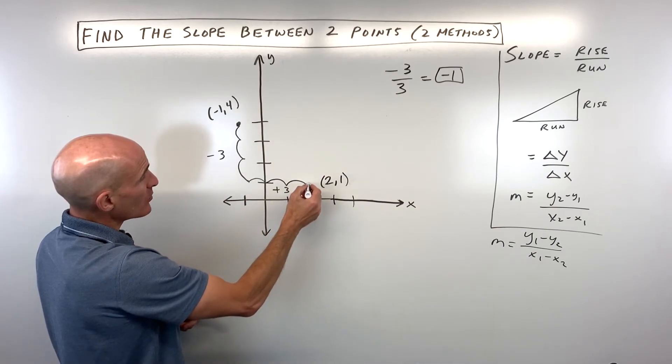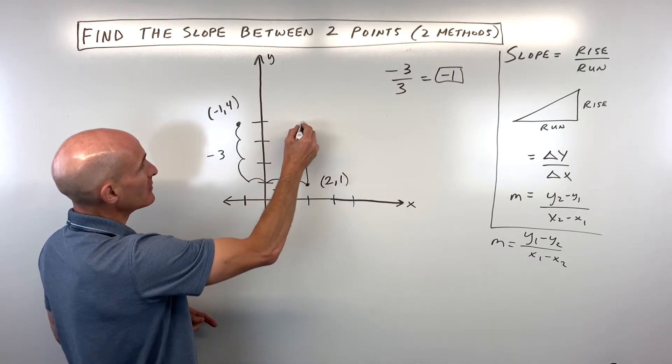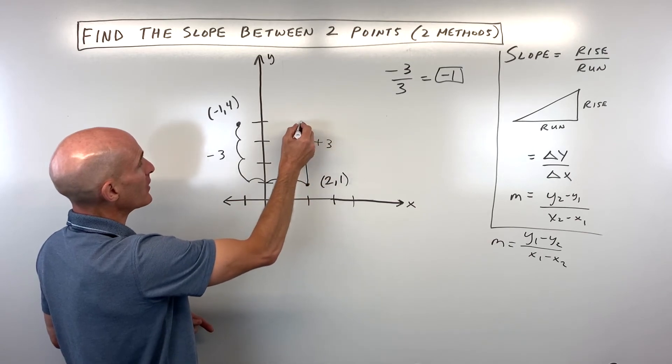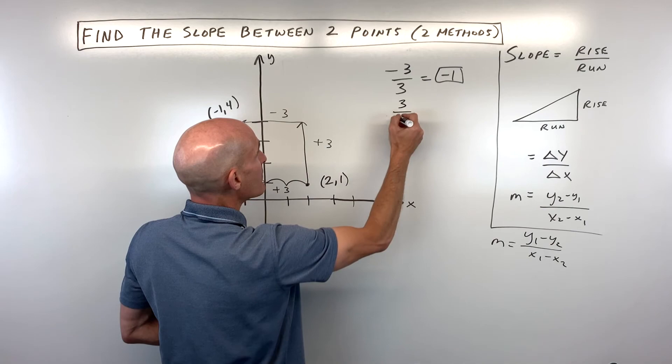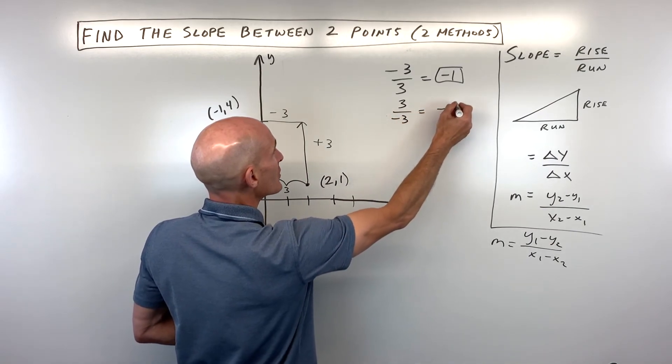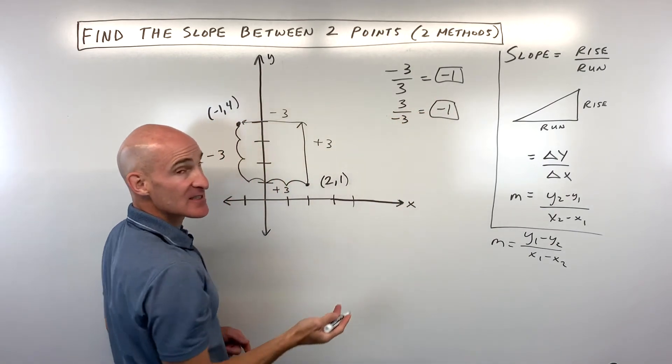We could also do it this way where we're going up 3. That's positive 3, and then we're going left 3. That's negative 3. In this case the rise is positive, the run is negative, but that still comes out to a slope of negative 1. Same answer.